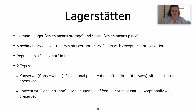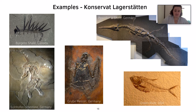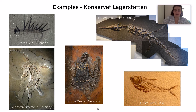Examples of conservat Lagerstätten include the Burgess Shale in Canada, which we will talk about in lecture two, the Solnhofen Limestone in Germany, Grube Messel in Germany, and the Posidonia Shale in Germany, as well as the Green River Formation in the USA.